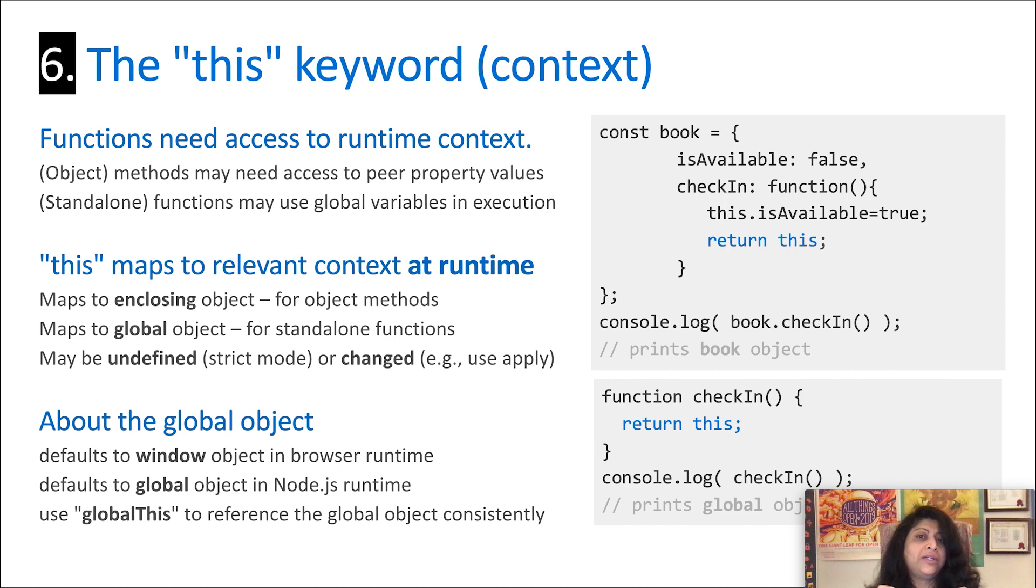The interesting thing is this is bound to a different object at runtime based on context. So if you are using a method, this by default is bound to the object that represents the owner of that method. So in this case, if I use this, it'll return book. But if I'm looking at a standalone function, it maps towards something called the global object. It's an object that represents the global runtime. We'll talk about that in just a second. There are some caveats though. If you apply strict mode, then unless you've explicitly set the value of this, it'll turn out to be undefined. And more importantly, we're not going to cover it in this module, but there are ways for you to actually specifically or explicitly tell a function what this object is by using methods or by using functions like apply. Look those up if you're interested.